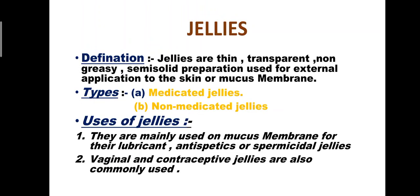Jellies: definition. Jellies are thin, transparent, non-greasy semi-solid preparations used for external application to the skin or mucous membrane. There are two types: medicated jellies and non-medicated jellies. Uses: they are mainly used on mucous membranes for their lubricant, antiseptic, or spermicidal properties; vaginal and contraceptive jellies are also commonly used.